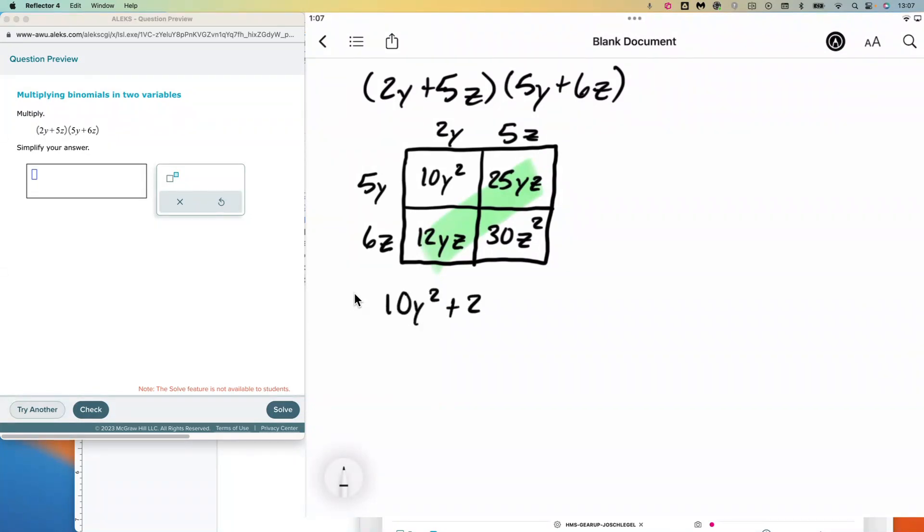So we get 10y² plus 25yz plus 12yz plus 30z². We can see that the yz's are like terms. And so we get 10y² plus 37yz plus 30z².